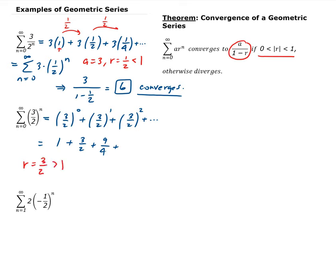Since r is 3 halves, which is bigger than 1, this series is going to diverge. These values are getting bigger and bigger, so the series diverges.